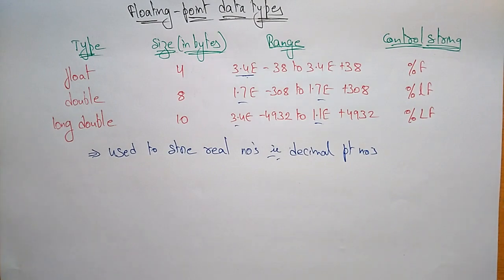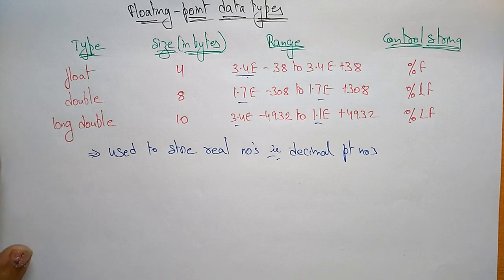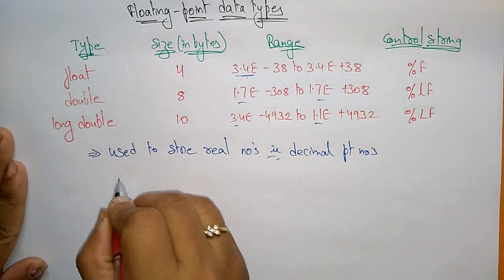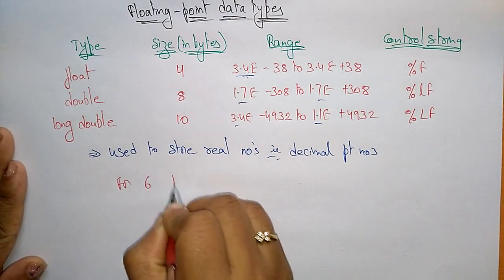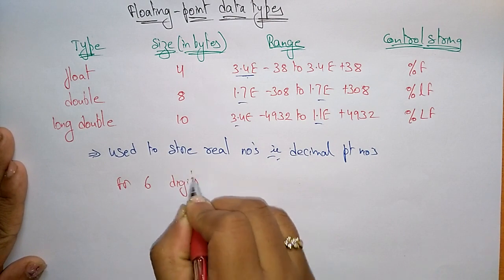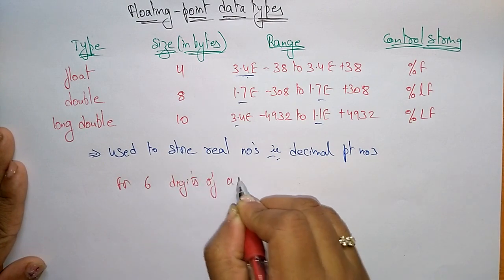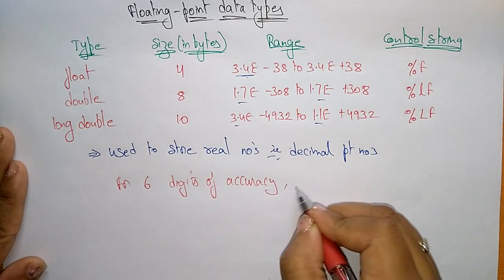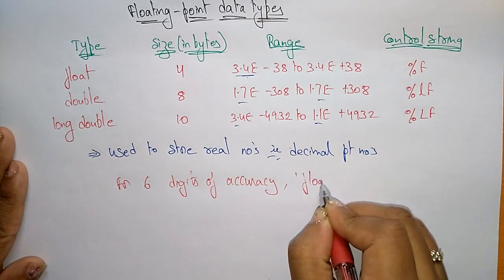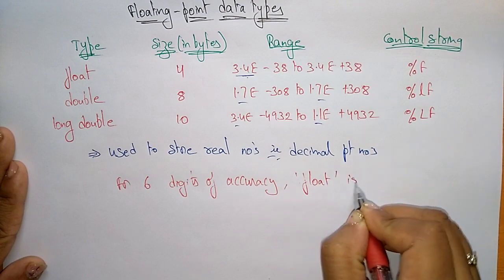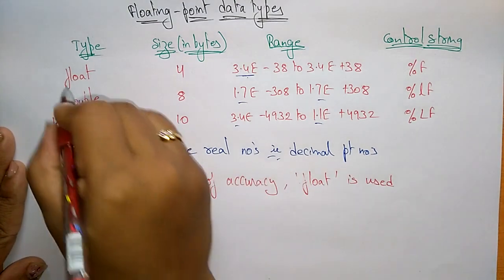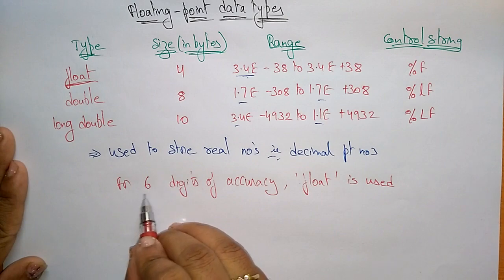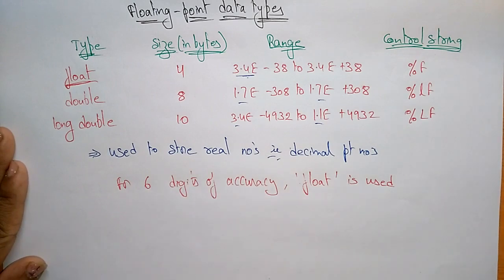The floating point data type is used to store real numbers like decimal point numbers. If you want 6 digits of accuracy after the decimal point, you can go for the float data type. So if you are using 6 digits of accuracy, you go for float.